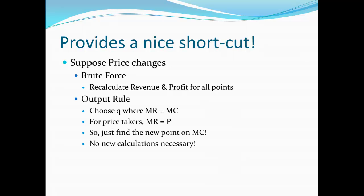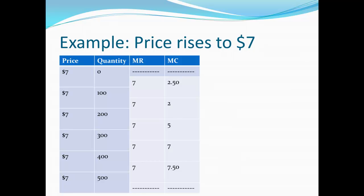For example, if the price rises to $7, we just replace all the marginal revenues with $7 and find we should produce somewhere between 300 and 400 units — that's where both marginal revenue and marginal cost equal $7. When the price falls to $2, we should produce between 100 and 200 units, because that's where marginal revenue equals marginal cost when marginal revenue is set to $2.